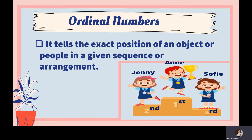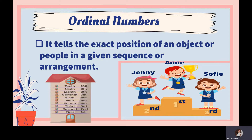Just like our example earlier, Ann is in first place, Jenny is second, and Sophie is third. They each have a specific place in the competition. We also use ordinal numbers in telling floor numbers — for example, in a condominium or building, we say first floor, second floor, third floor, fourth floor, and so on and so forth. Those are some examples of ordinal numbers used in real life.